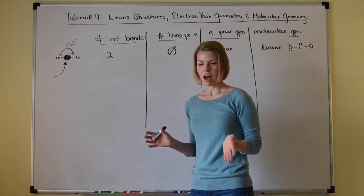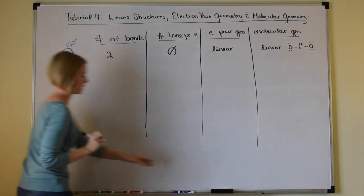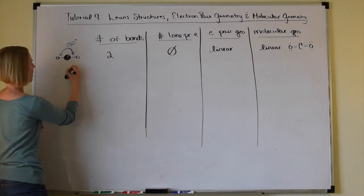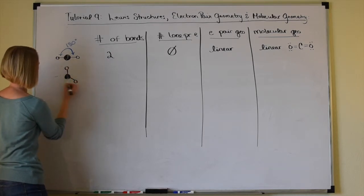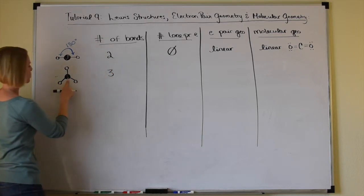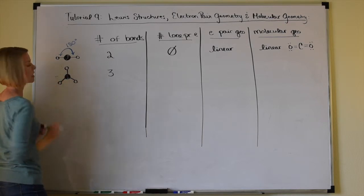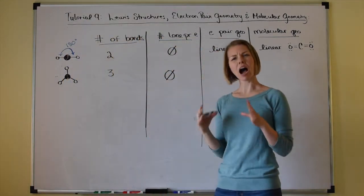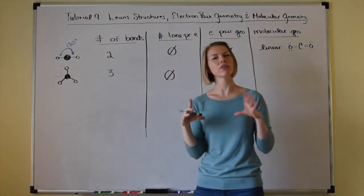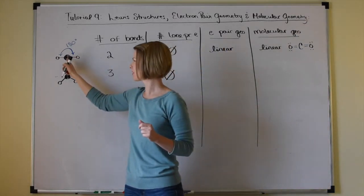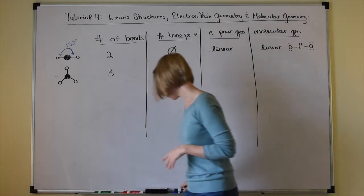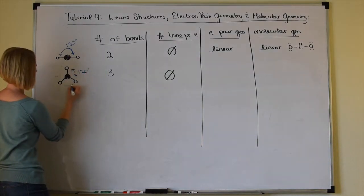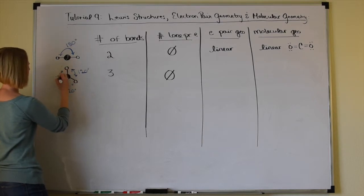Now, what if the central atom is covalently bound to three other atoms? We have three bonding sets of electrons and no lone pairs with respect to the central atom. How far apart can three charge clouds get in three-dimensional space? They can get 120 degrees apart — the angles here are going to be 120, 120, and 120.